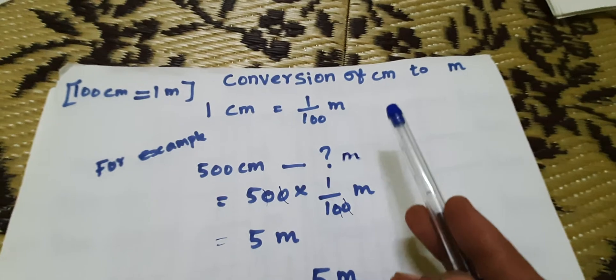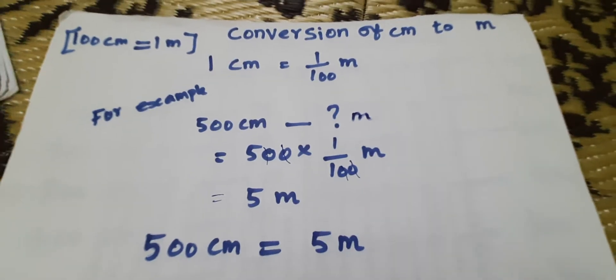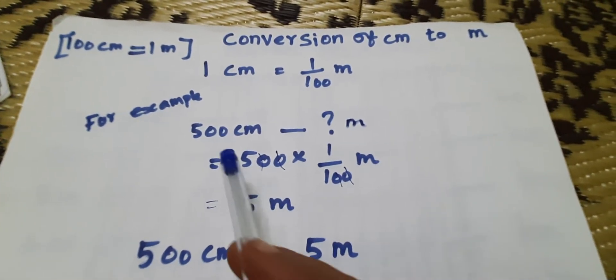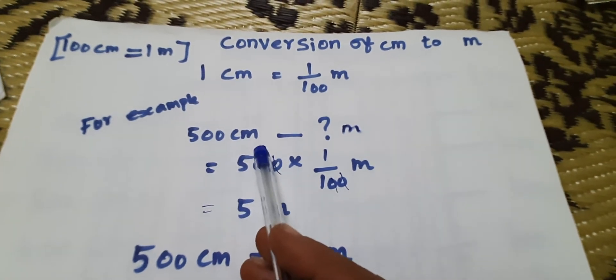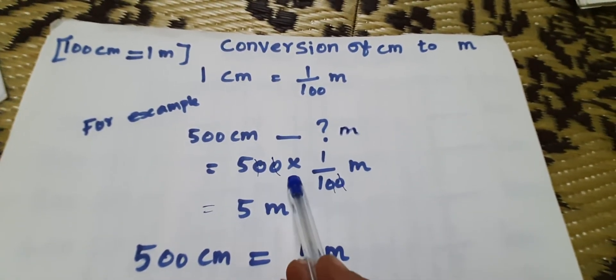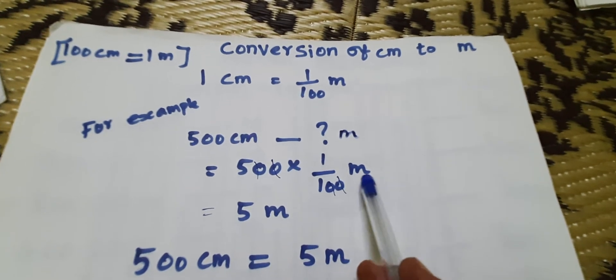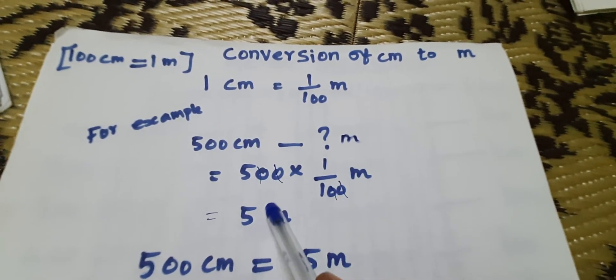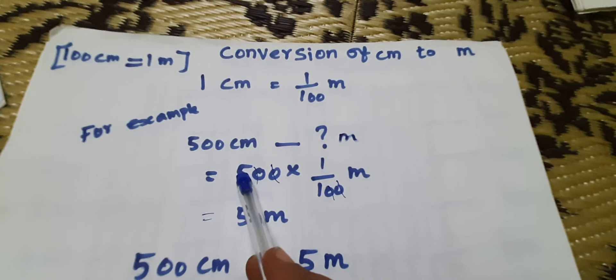For example, how many meters are there in 500 centimeter? 500 into one by hundred meter. Strike out the two zeros. Answer is five.